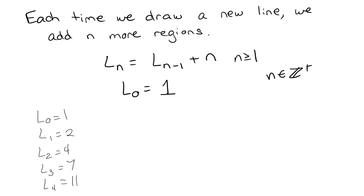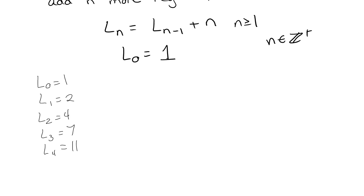Looking at the values — do you see a pattern? Aside from adding n each time, if you wanted to say f(n) equals n squared plus 5n plus 17 or something, I don't see a direct relationship between 4 and 11 or 3 and 7 off the top of my head. So we'll use a mathematical technique called unwinding — or unfolding — which is what you do when you stare at math problems alone.